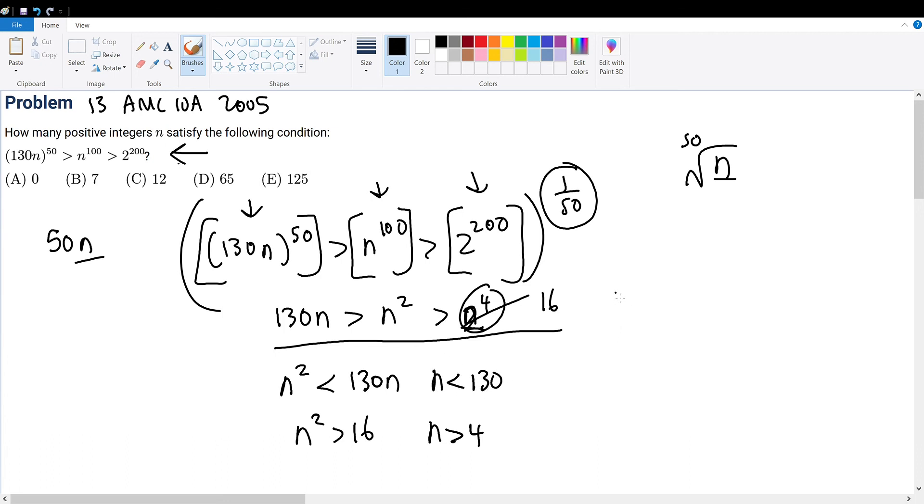And now we must be very careful. n is greater than 4 and is less than 130. So this is an open bracket comma 130 n bracket. So it's open bracket 4 comma 130.